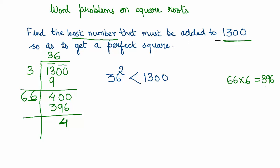It must be added to 1300 so as to get a perfect square. So what is the next square number after this? That is 37, and when you square 37, what you get is 1369.